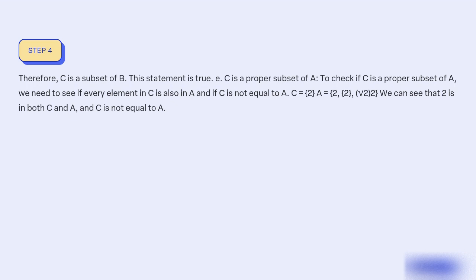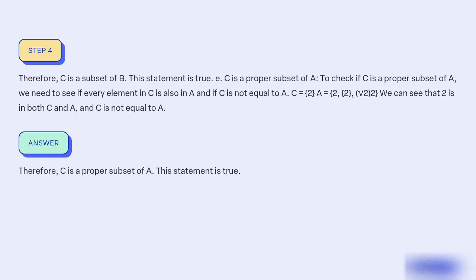To check if C is a proper subset of A, we need to see if every element in C is also in A, and if C is not equal to A. C equals {2} and A equals {2, √2}. We can see that 2 is in both C and A, and C is not equal to A. Therefore, C is a proper subset of A. This statement is true.